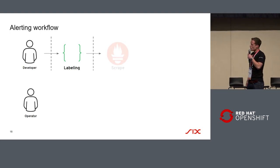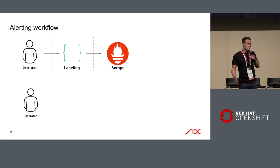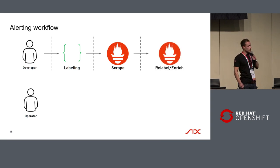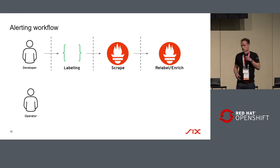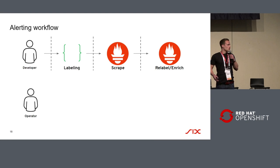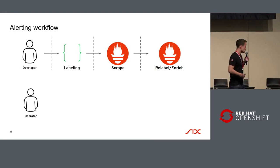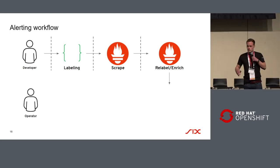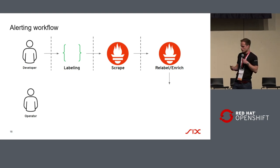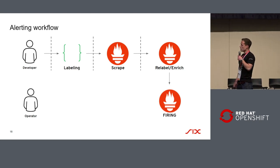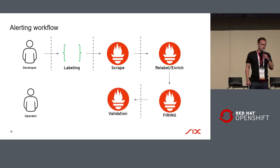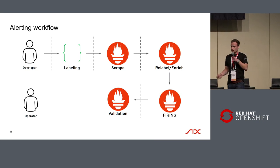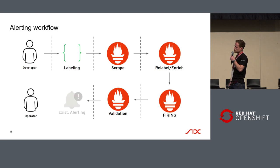After he labels his objects, we automatically scrape his objects inside Prometheus. The next thing we do is relabel and enrich those metrics with, for example, the business unit, service codes, and so on — we enrich all those metrics based on his labels. After that, Prometheus evaluates those rules, and if there is an alert, we will fire. Then — this is a really important thing — we revalidate if all those labels are valid, so we can send it to the existing alerting system.